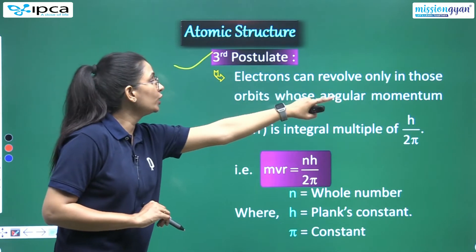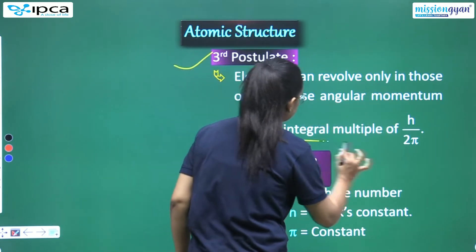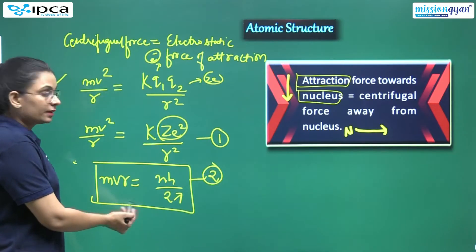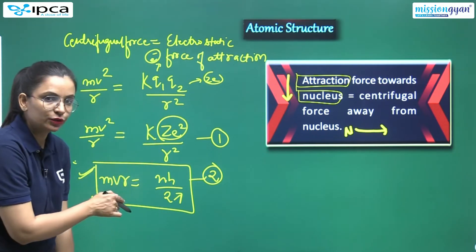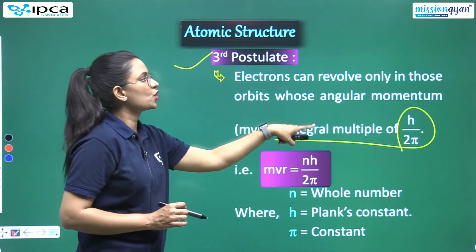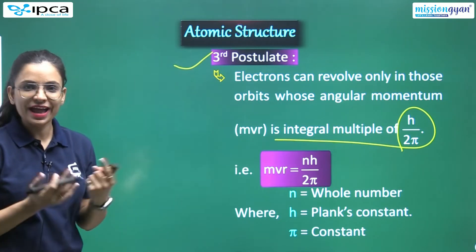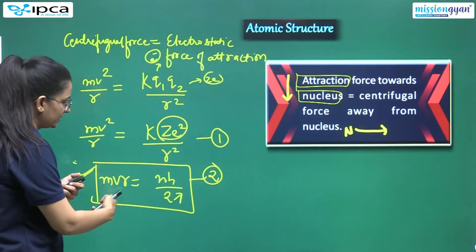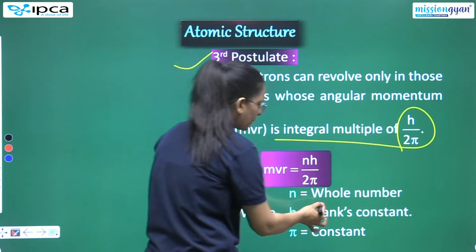Now if I say that mvr is equals to nh upon 2 pi. Can I say it? I can say it. Why can I say it? Because our electron is rotating in a circular motion at a constant radius. Let's take a look at this.